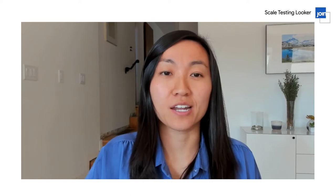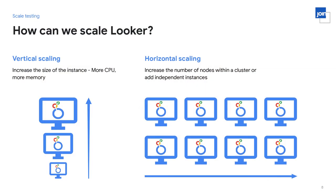Before we continue to talk about scale testing Looker, it's important for us to understand how we can scale Looker. There are two main methodologies. The first one is vertical scaling. What this means is that we have a single node of Looker, and to scale it, we increase the size of the instance by providing more CPU and more memory.